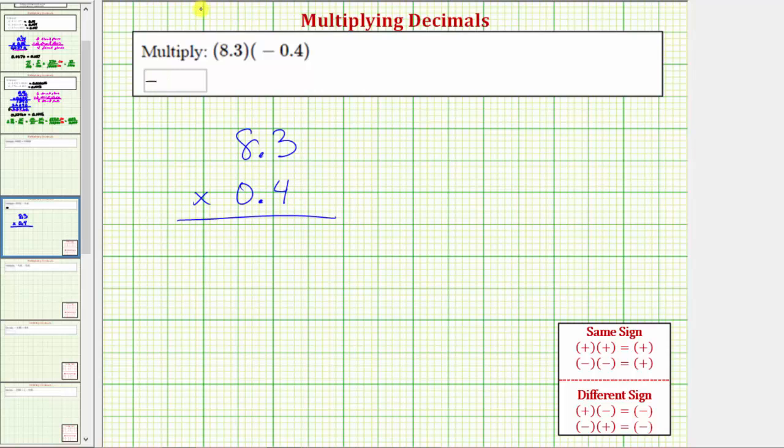The next step is to determine the number of decimal places in each decimal. 8.3 has one decimal place and so does 0.4. Let's go ahead and record this information. 8.3 has one decimal place and 0.4 also has one decimal place.